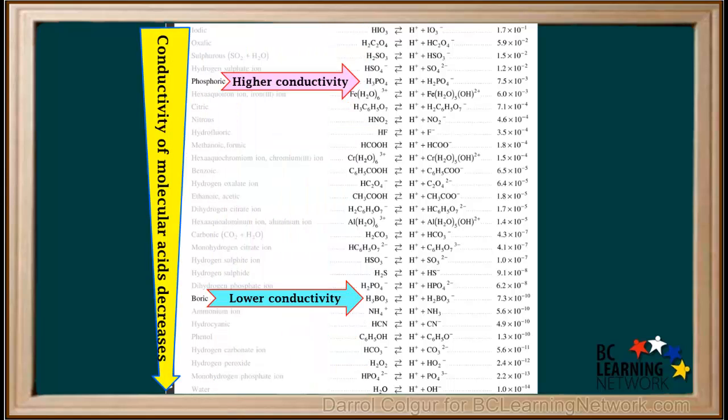So if we were to compare the conductivity of phosphoric acid with that of boric acid, we would predict that phosphoric acid has higher conductivity than boric acid. We can also see that higher conductivity correlates with a higher value for the ionization constant, Ka.